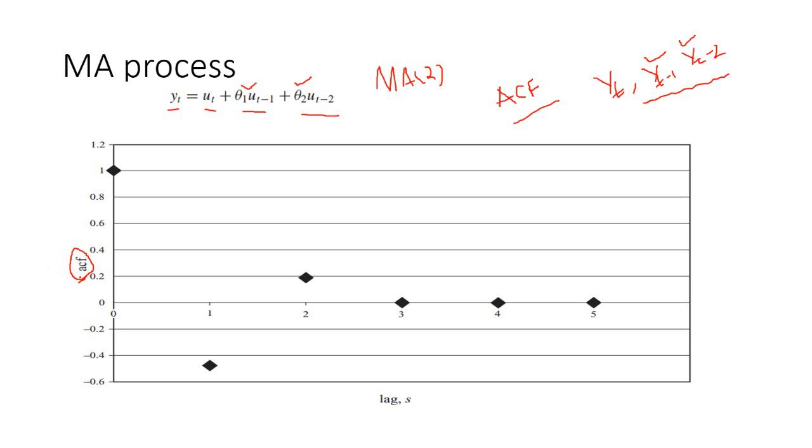So, this is a plot which is plotted before finalizing what is the order of a MA series. This is a plot of ACF, autocorrelation function with respect to the lags. As you can see in this graph, the first one is always 1. The autocorrelation function takes the value of 1 because it is a correlation between yt and yt. So, we ignore that.